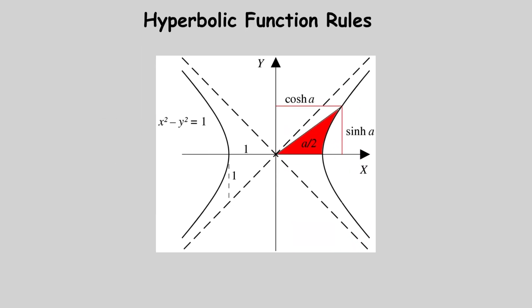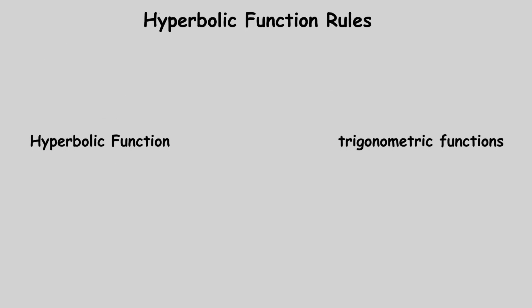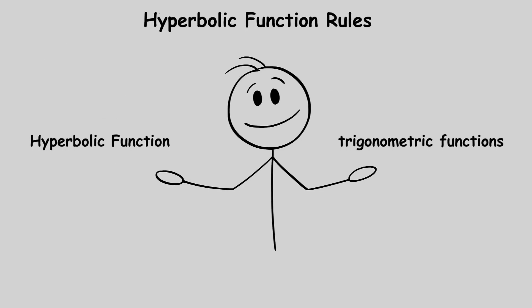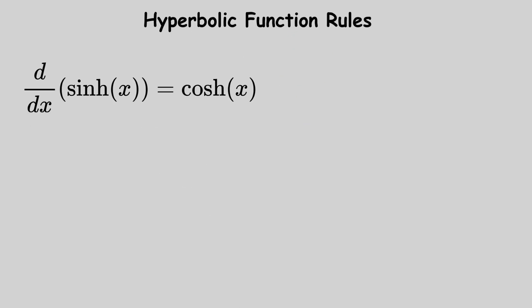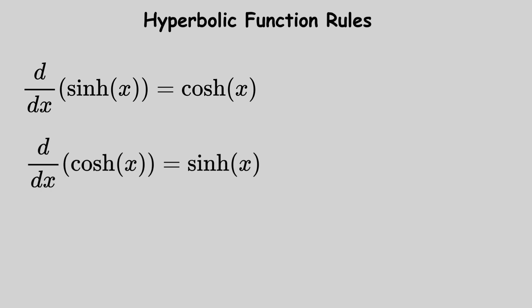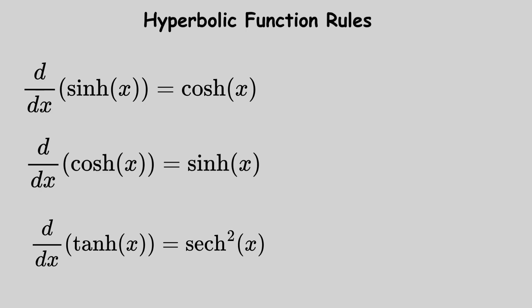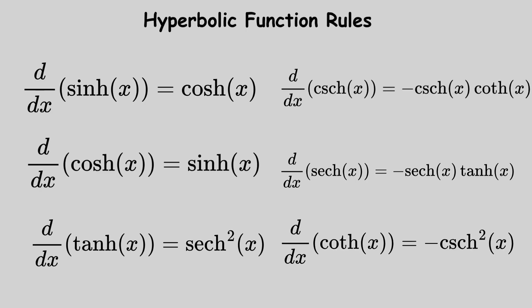Hyperbolic function rules: hyperbolic functions behave similarly to trigonometric functions but with slightly different patterns. Hyperbolic sine becomes hyperbolic cosine. Hyperbolic cosine becomes hyperbolic sine — positive, not negative. Hyperbolic tangent becomes hyperbolic secant squared, and so on.